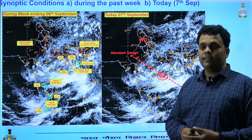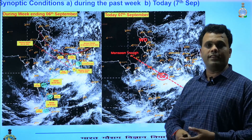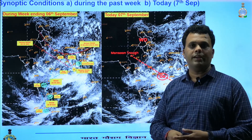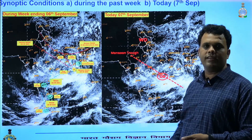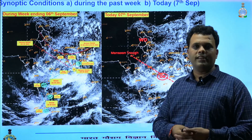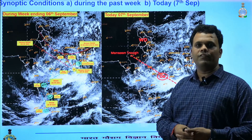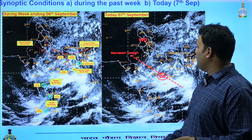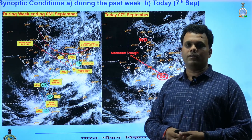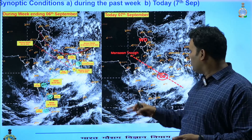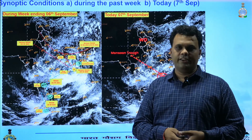Today's condition: the monsoon trough is towards the south of its normal position, indicating an active situation, and it is passing through the cyclonic circulation remaining after the weakening of the low pressure area. There is also a western disturbance situated over the northern parts of the country, and a shear zone roughly along 19 degrees north latitude.